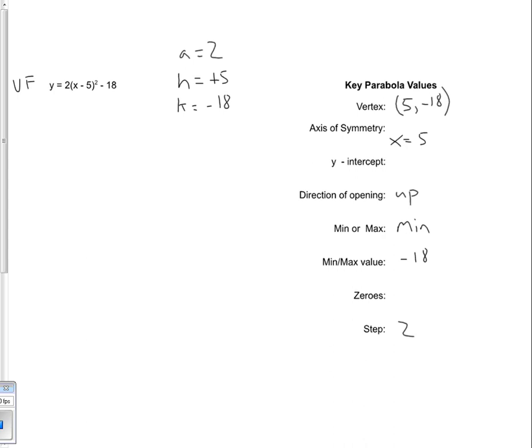So most of my information is found out of the vertex form of the equation, but not all of it. So we actually have to convert from vertex form into standard form. I have a binomial in the middle, and so what I need to do is I actually need to multiply that all the way through. So I'm going to do 2 times x minus 5 times x minus 5 minus 18.